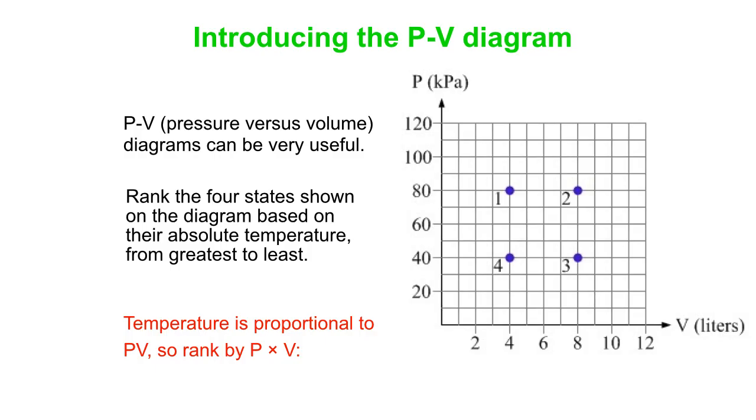So state 2 has the highest PV value. In fact, it's twice as big as state 1 as well as twice as big as state 3. So that means the temperature in state 2 is twice as big as it is in 1 or 3.